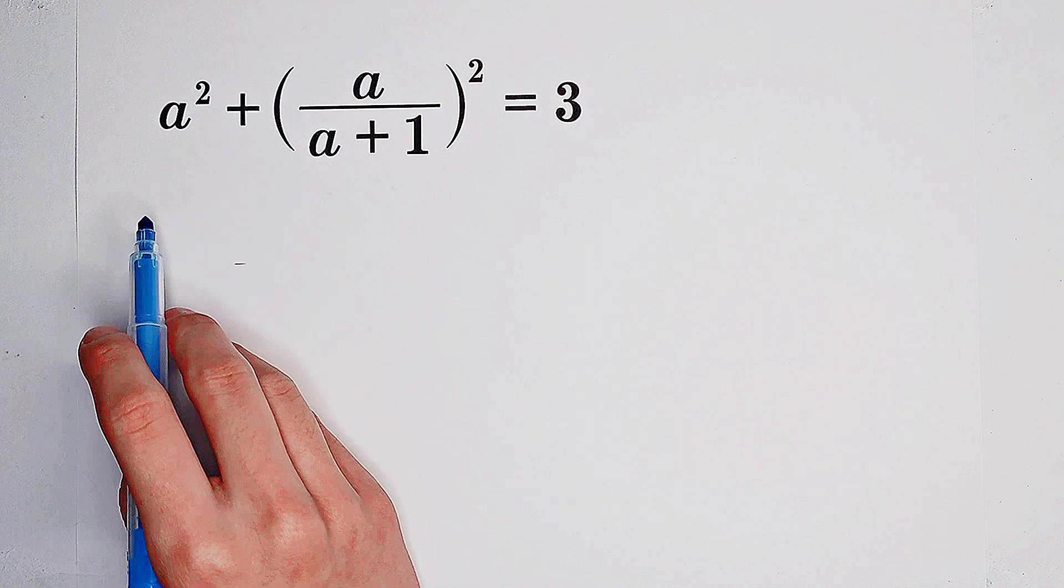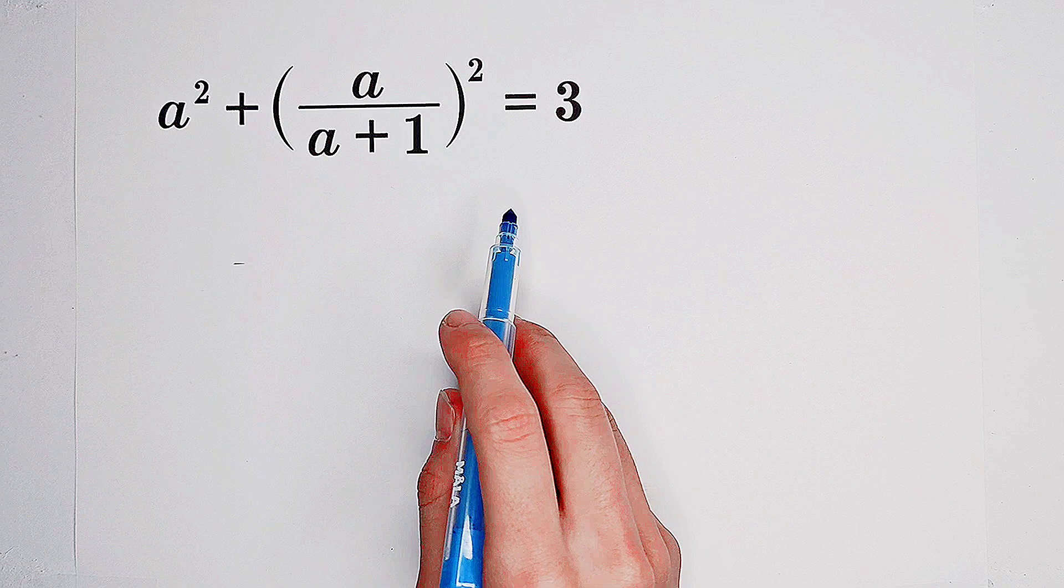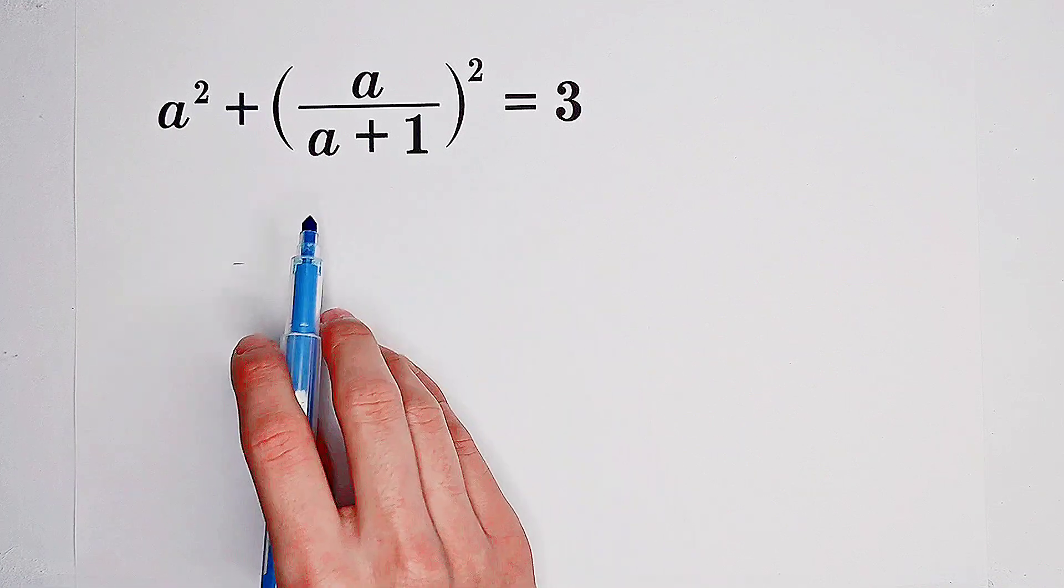Solve for a satisfying a squared plus a over a plus 1 all squared equals 3. What shall we do? This fraction is very ugly.